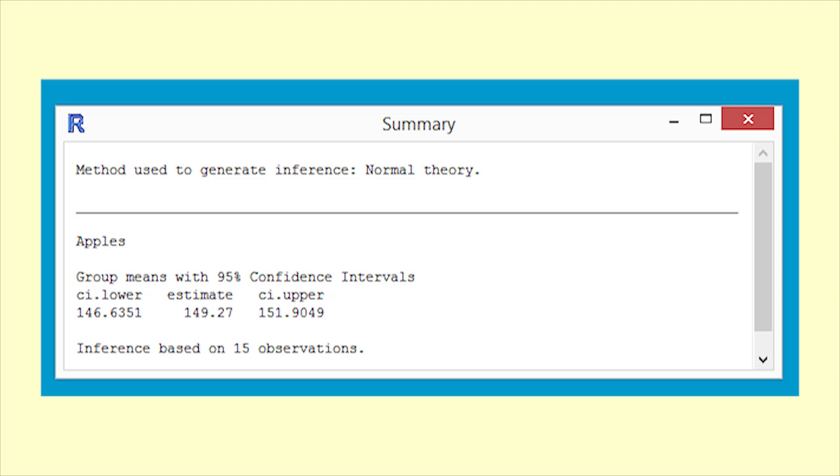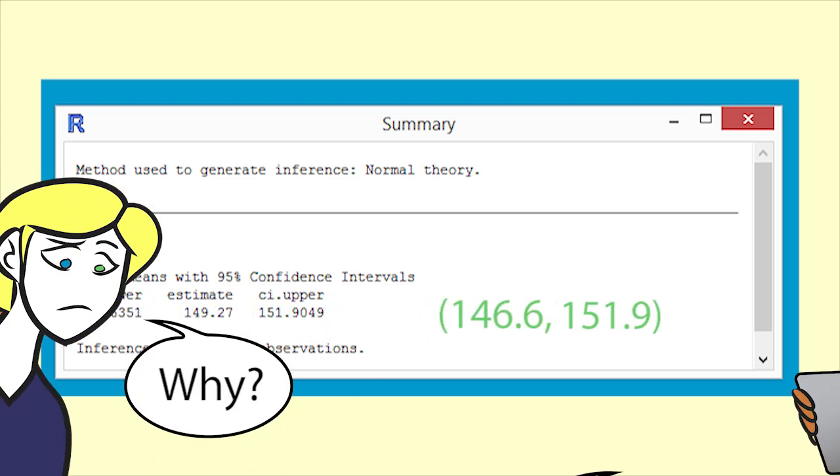A much quicker way is simply to get the computer to calculate the confidence interval. Note that the answer here is slightly different due to rounding. You should never give confidence intervals to too many decimal places.